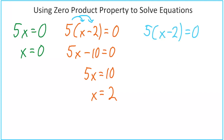Now let's look at that equation one more time. What if instead of distributing, I noticed that the x minus 2 part is kind of like the x in the first equation? In the first equation, 5 times x equals zero means x is obviously zero. So if instead of distributing, I realize it's 5 times the parentheses part, that means the parentheses part has to equal zero. That is basically what zero product property does. Add 2 to both sides and we get the same answer — just done a different way.